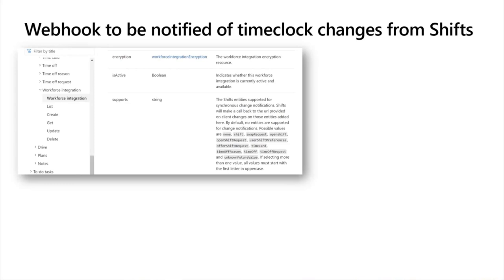Lastly, the webhook capabilities. There is a webhook API you can register against, specific to the Shifts application. This is the Workforce Integration API — it's a bit of a confusing name if you're not familiar with workforce systems. Basically, you can register your application as an integration between two workforce systems, with Shifts being one and the other being a workforce management system like Kronos. This API is exclusively a webhook API where you can register your integration.